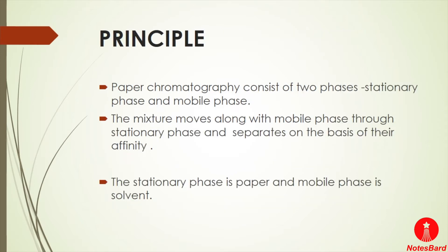Let's understand the principle on which paper chromatography works. All chromatography methods work on the same principle: they consist of a stationary phase which cannot move and a mobile phase which has the ability of movement. The sample mixture moves along with the mobile phase through the stationary phase and separates on the basis of the affinity of its different components.